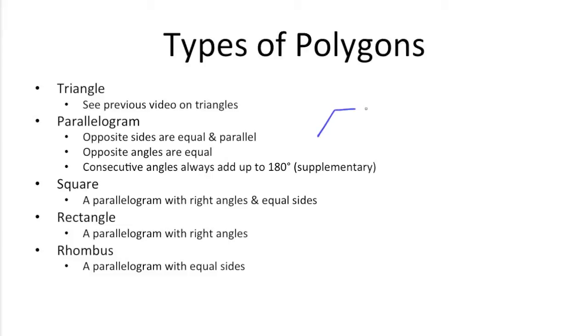Parallelograms, which are four-sided shapes with opposite sides that are equal and parallel. So the top and bottom are of equal length and are parallel, and the left and right sides are equal and parallel to each other. Opposite angles are equal, so these angles are equal, and these angles are equal. And consecutive angles always add up to 180. So this angle and this angle will add up to 180, and this angle and this angle will be 180, and the same goes for this and this, and this and this.